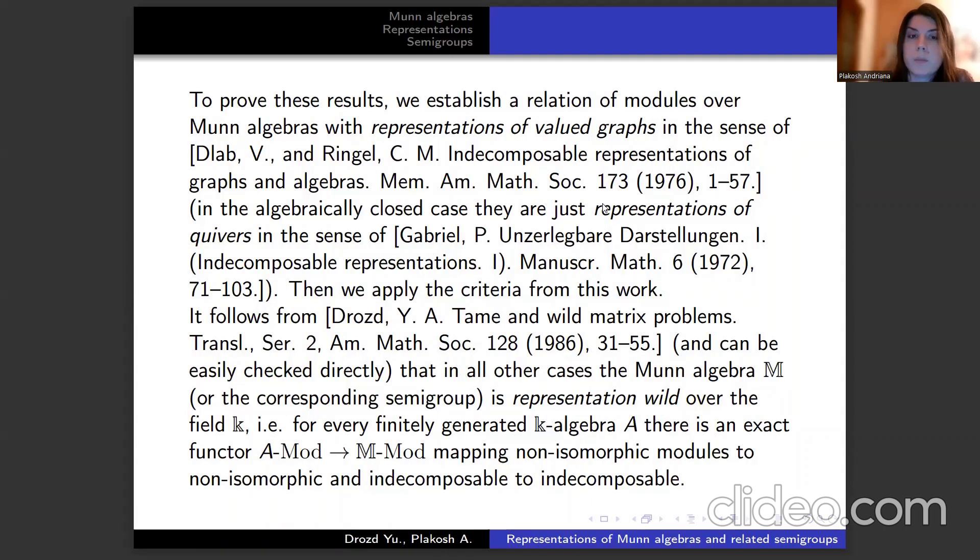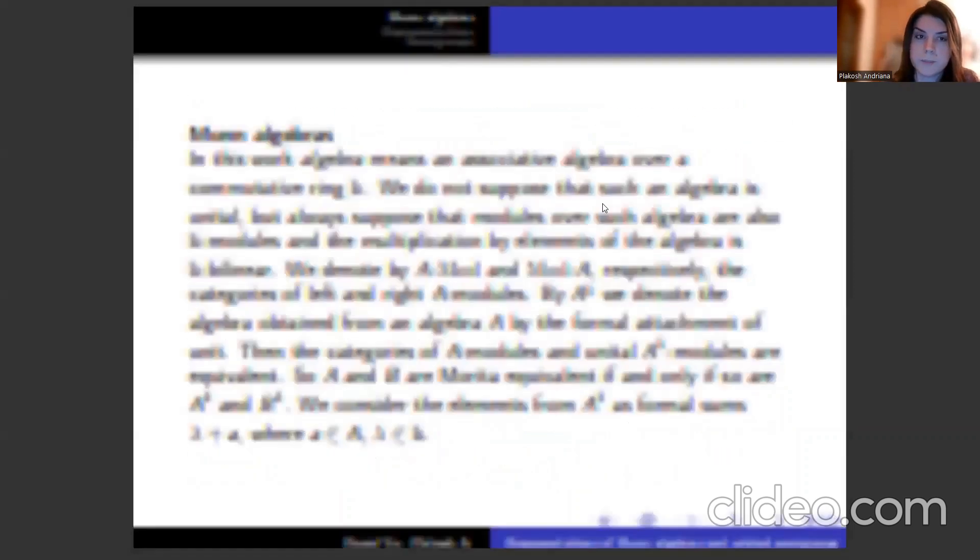It follows from Dlab and Ringel's paper and can be easily checked directly that in all other cases the Munn algebra M or the corresponding semigroup is representation wild over the field k, meaning for every finitely generated k-algebra there is an exact functor mapping non-isomorphic modules to non-isomorphic and indecomposable to indecomposable.